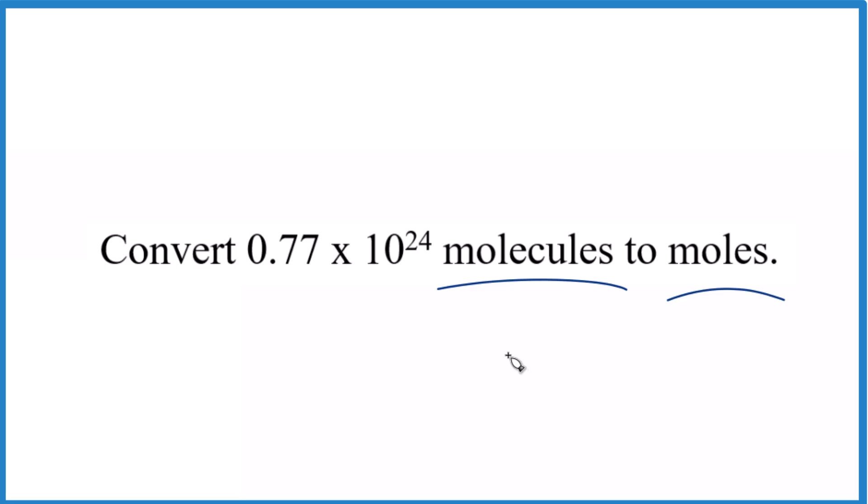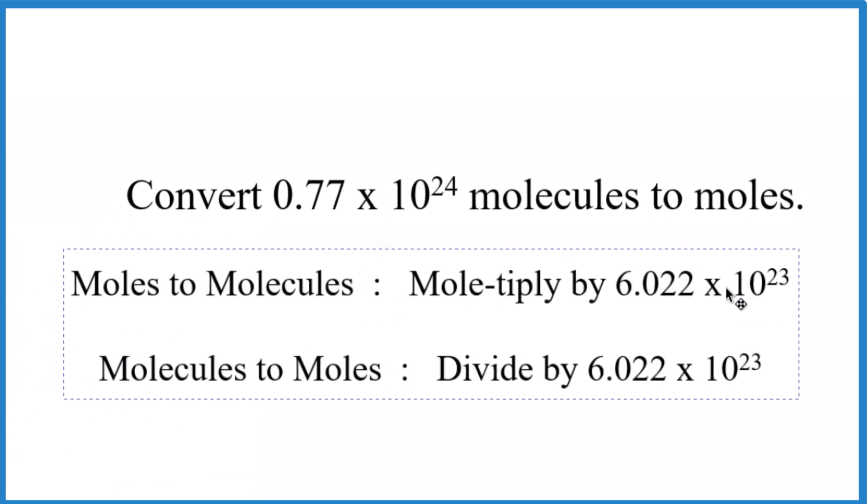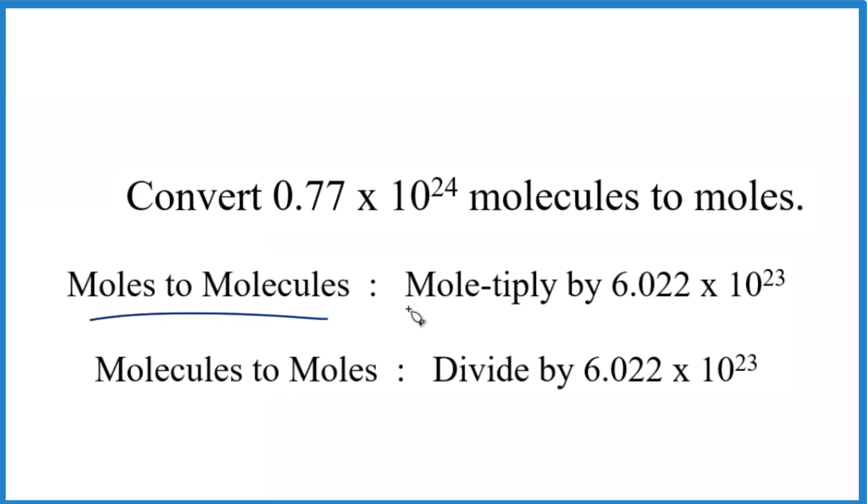So here's one way that you could do this. If you remember this mnemonic here, it kind of helps you out when you're converting molecules to moles. We would say that when we go from moles to molecules, we're going to multiply by Avogadro's number. So we're starting with moles. That means we multiply.